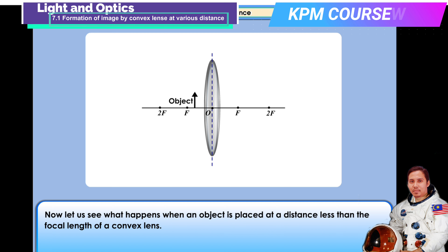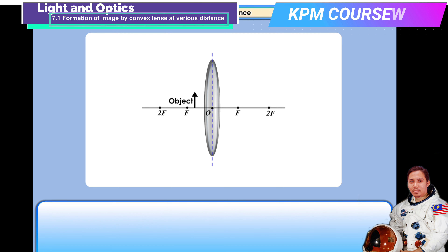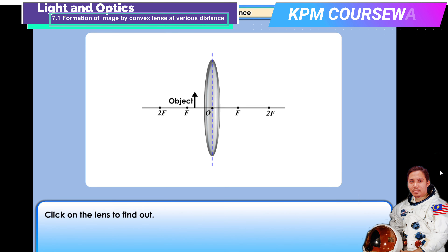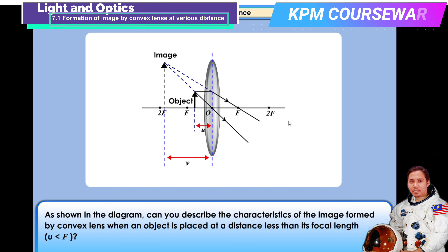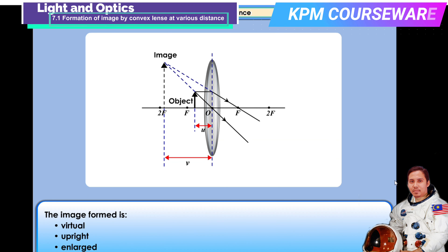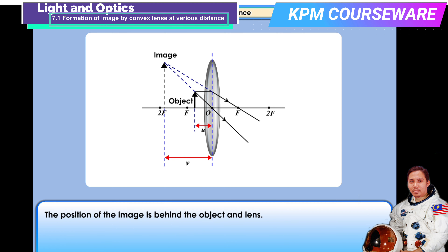Now, let us see what happens when an object is placed at a distance less than the focal length of a convex lens. Let's see what happens when the rays pass through the convex lens. This can be symbolized as u < f. Can you describe the characteristics of the image formed? The image formed is virtual, upright, and enlarged. The position of the image is behind the object and lens.